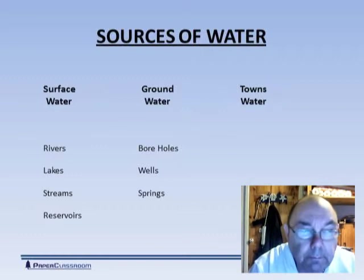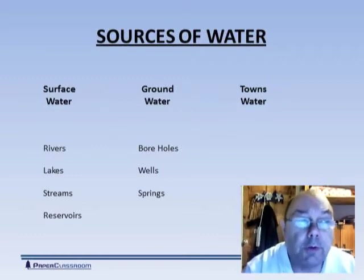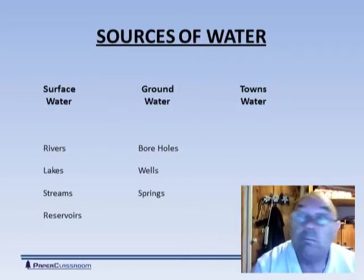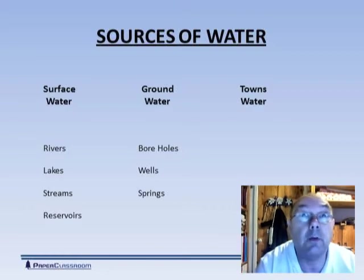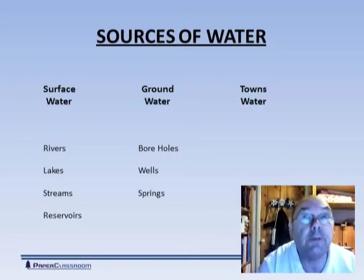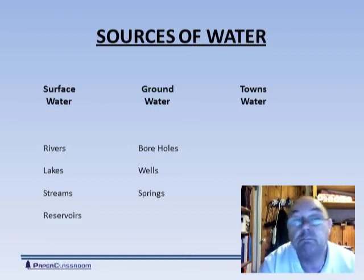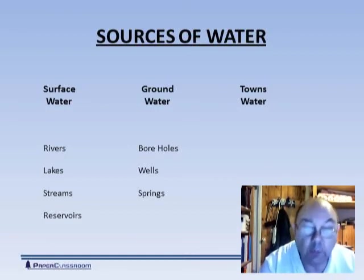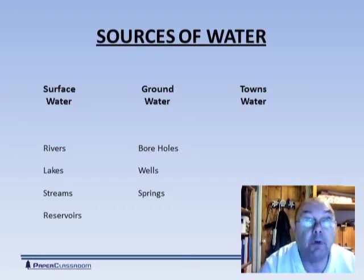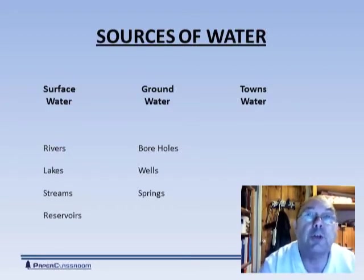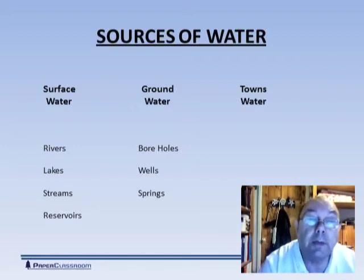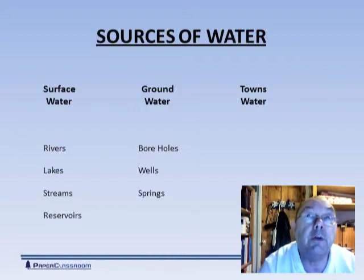Sources of water — there are three sources of water. There's surface water, which is what you can see when you look around, whatever is on the surface of the earth. There's groundwater, which is what's underneath the ground and you can't see it, but you can dig for it or drill for it. And then finally there's also towns water, and some mills really do use very expensive towns water, but they use it very efficiently.